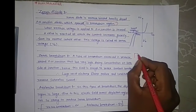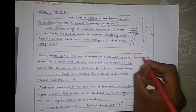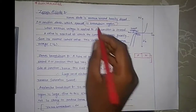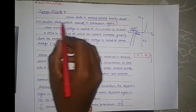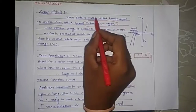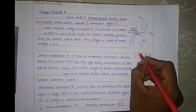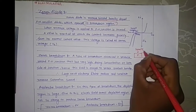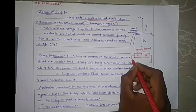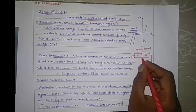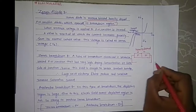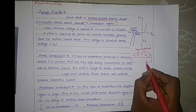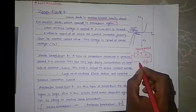Let's draw the PN junction diode. This is a P-type material and this is an N-type material. The Zener diode is a reverse biased, heavily doped diode, so both PN junctions must be heavily doped. In reverse bias, the positive terminal of the battery is connected to the N-type material and the negative terminal is connected to the P-type material.